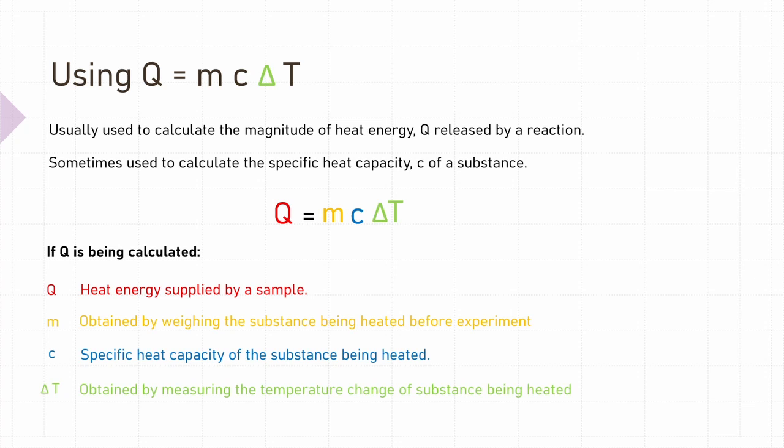This equation is usually used to calculate the magnitude of heat energy released during a reaction, and is also sometimes used to calculate the specific heat capacity of a substance. If the variable of interest is Q, then Q equals the heat energy supplied by a sample of interest. m is the mass of the substance that receives the heat energy — most of the time, this would be water. c is the specific heat capacity of the substance that receives the heat energy, again usually water. ΔT is the temperature change experienced by the substance absorbing the heat.